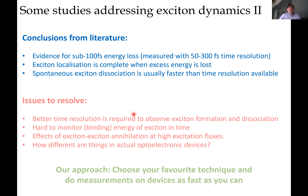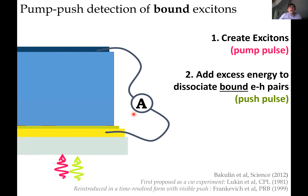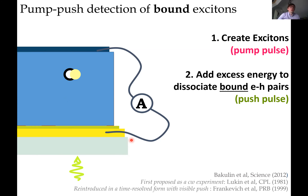We decided to contribute to this broad field. Our approach was to choose our unique technique — a device-based technique we call pump-push-photocurrent. In application to excitons, we have a working device with a homo-junction — basically just an organic material between two electrodes — and we measure current. We first shine visible light to excite the organic material, creating initially hot excitons which then cool down and become a bound electron-hole pair.